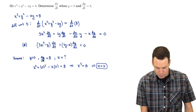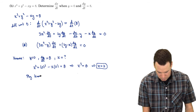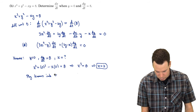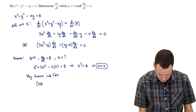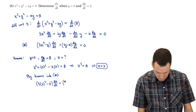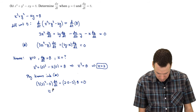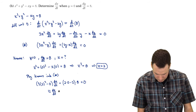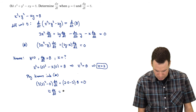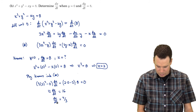Now I plug everything into equation star: 3(2²) − 0 times dx/dt, plus 2(0) − 2 times dy/dt (which is 8), equals zero. This gives 12 · dx/dt − 16 = 0, so 12 · dx/dt = 16, meaning dx/dt = 16/12, or 4/3. The derivative of x with respect to t is 4/3.